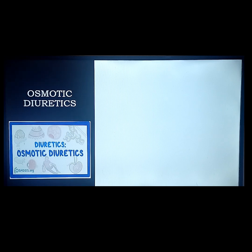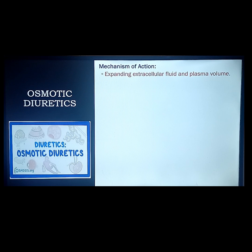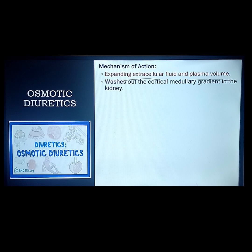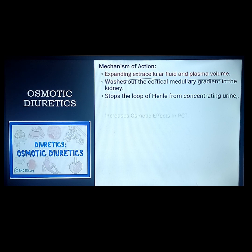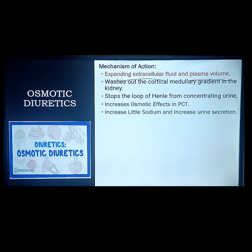For osmotic diuretics, the mechanism of action starts by expanding the extracellular fluids by increasing plasma volume. It washes out the cortical-medullary gradient of the kidney and stops the loop of Henle from concentrating the urine. The loop of Henle is where most water absorption takes place; this drug reduces water absorption there, so water is excreted. It also increases osmotic effects in your proximal convoluted tubule and increases sodium and urine secretion.